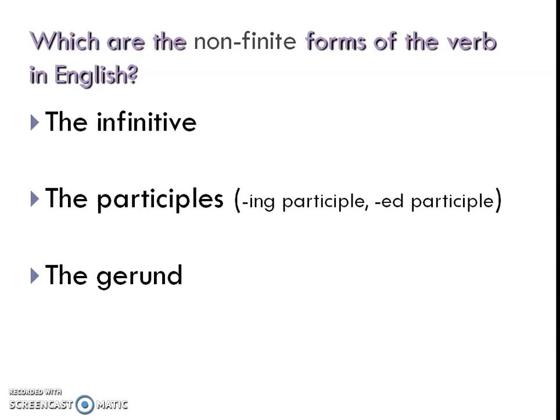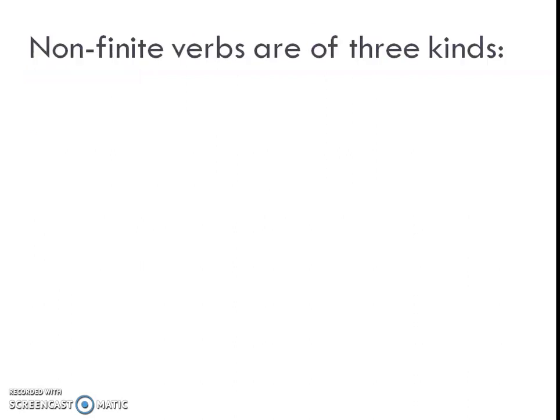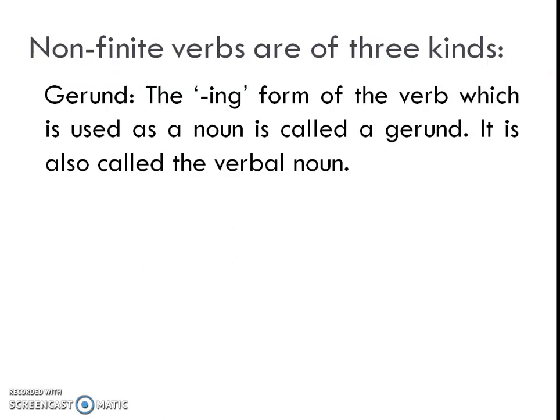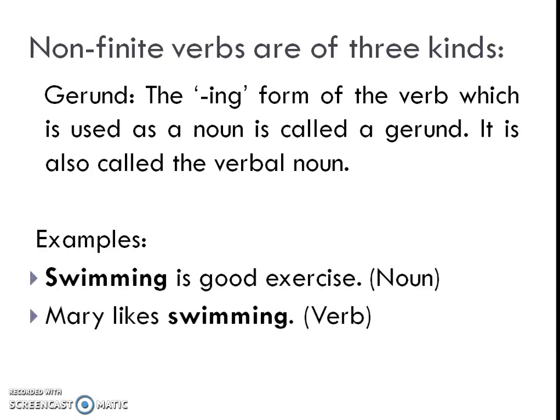The basic difference is: finite verbs change as per the subject, whereas non-finite verbs are used with the prefix 'to' and don't change according to the subject. The non-finite forms of the verb in English are: the infinitive, the participle, and the gerund. The gerund is the -ing form of the verb used as a noun. Example: 'Swimming is a good exercise' — here swimming works as a noun. 'Mary likes swimming' — here swimming works as a verb.